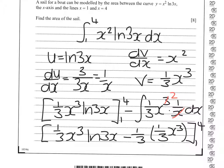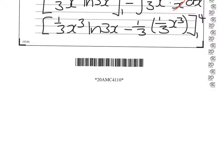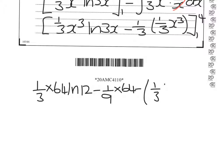All between 1 and 4. Substituting in our values, we have 1 third times 4 cubed ln 12 minus 1 ninth times 4 cubed, take away 1 third ln 3.